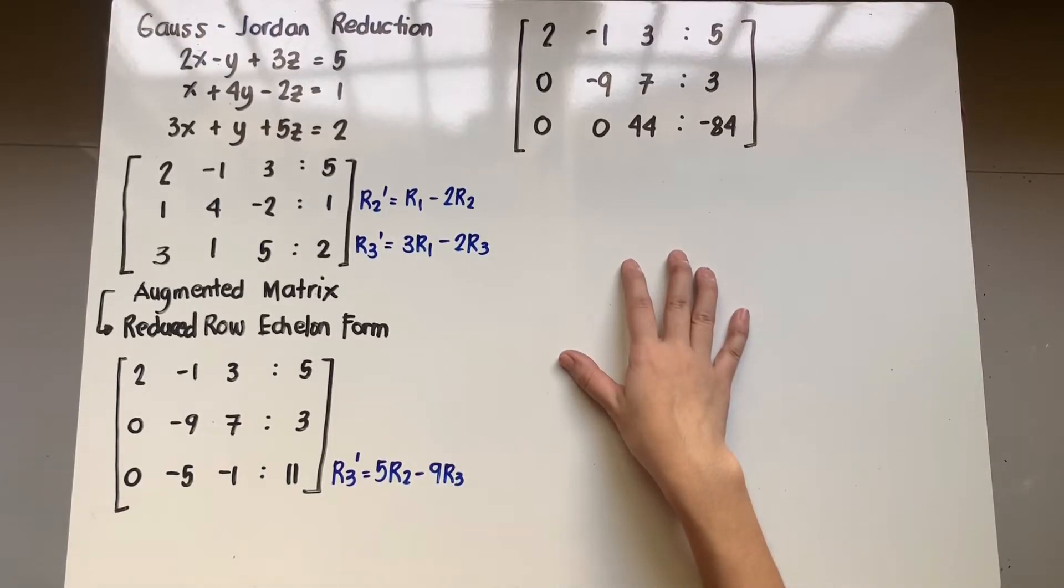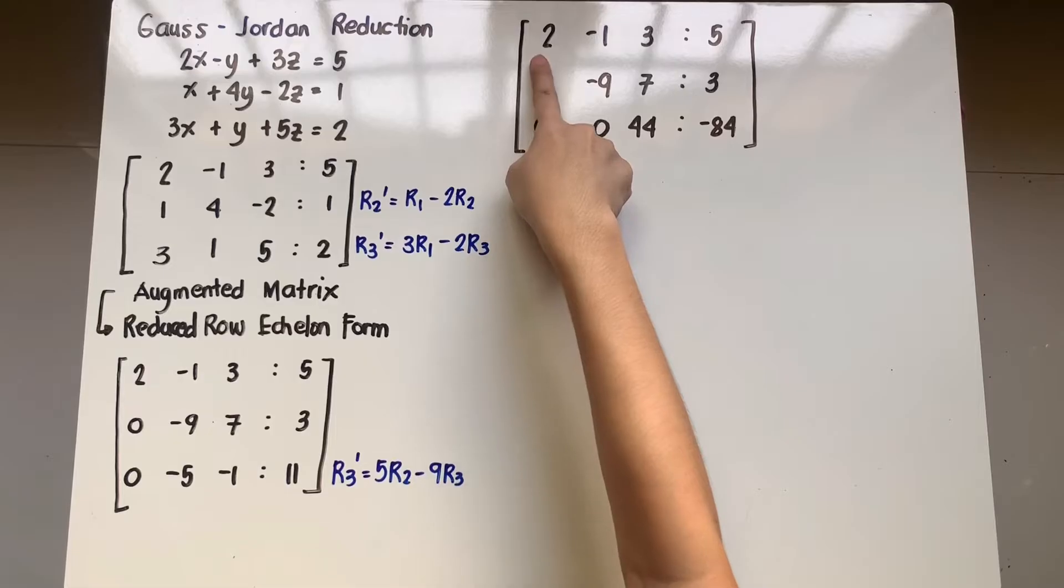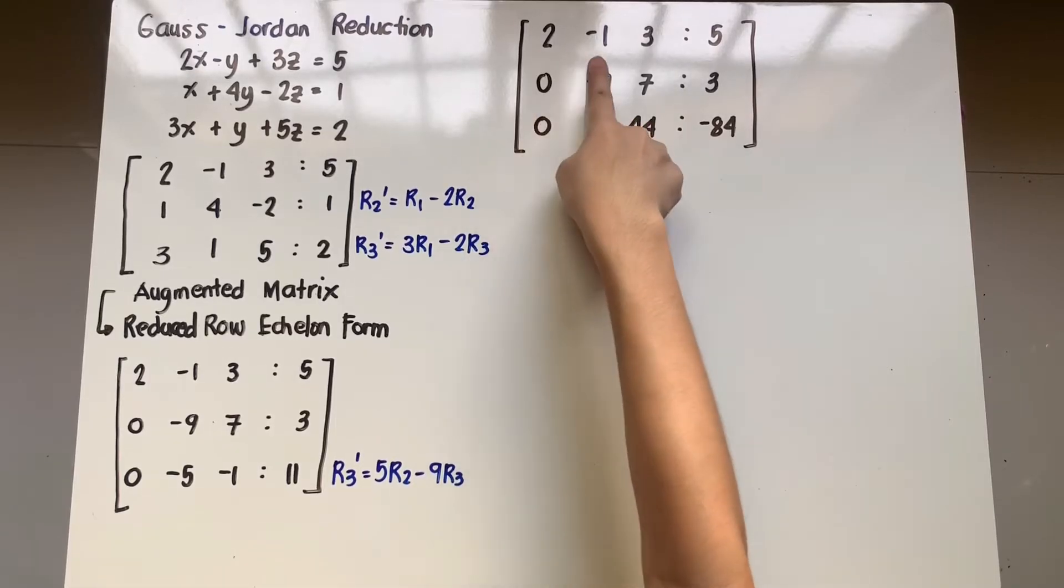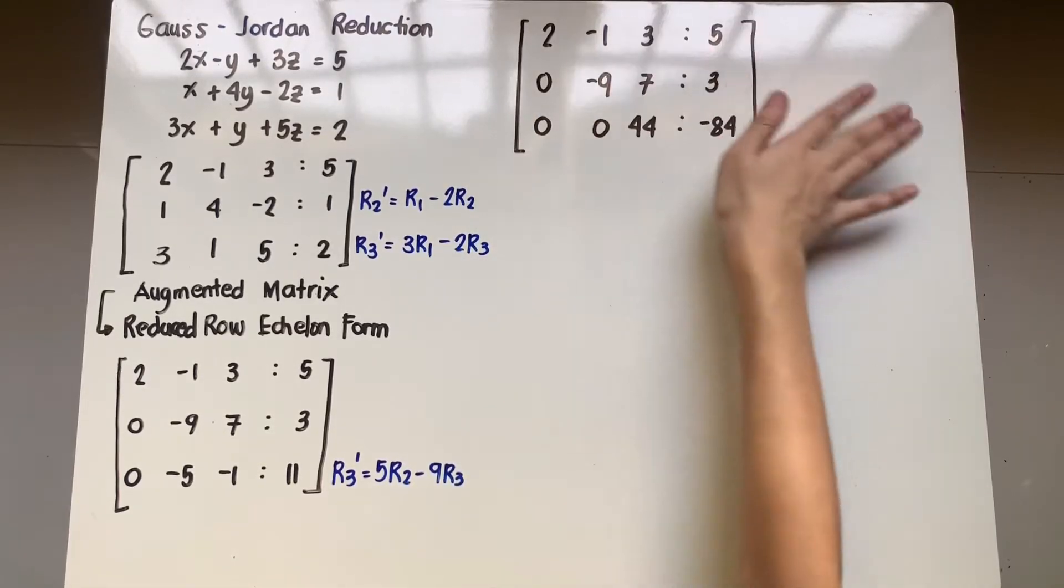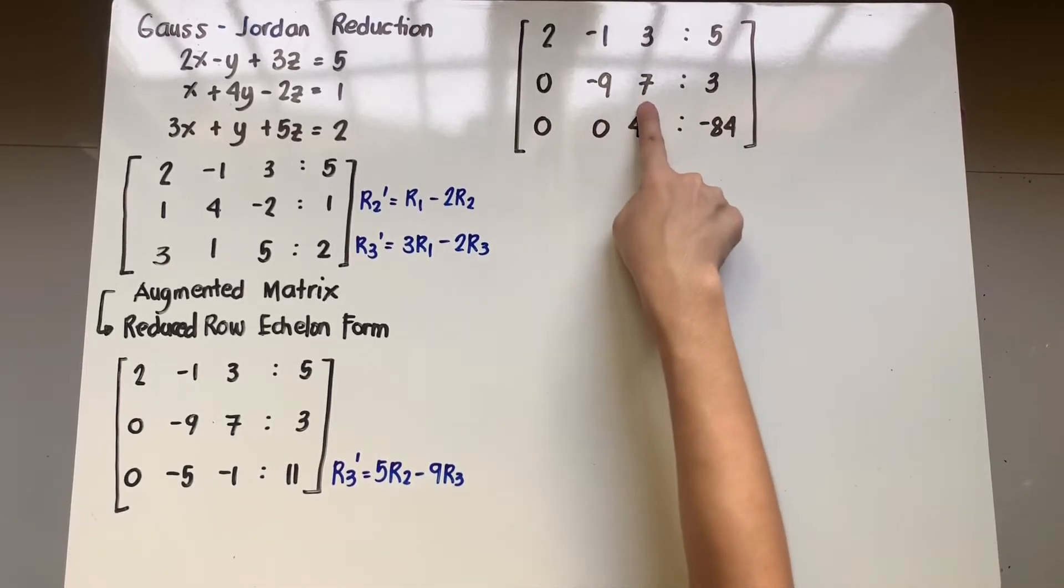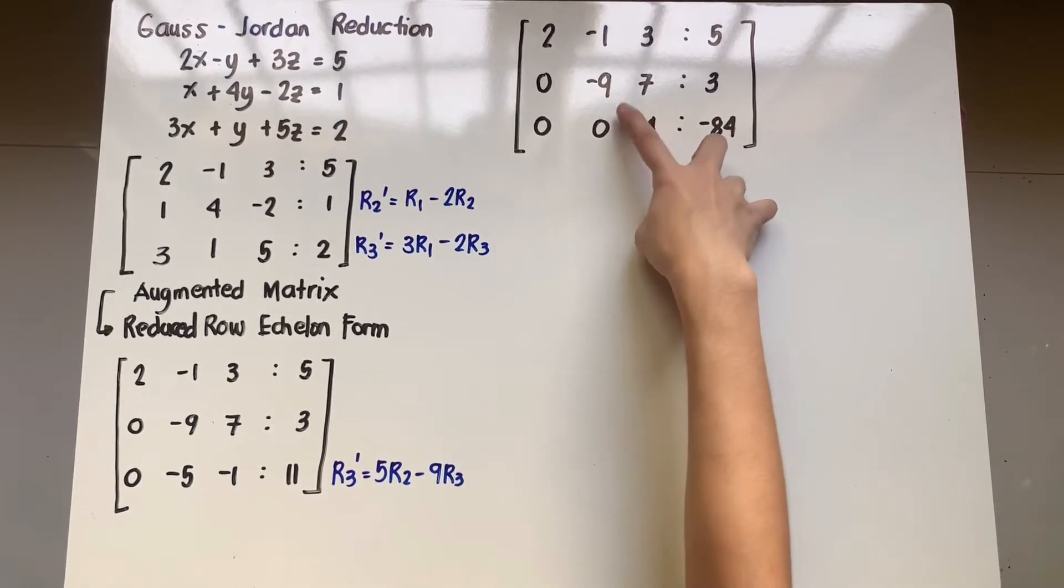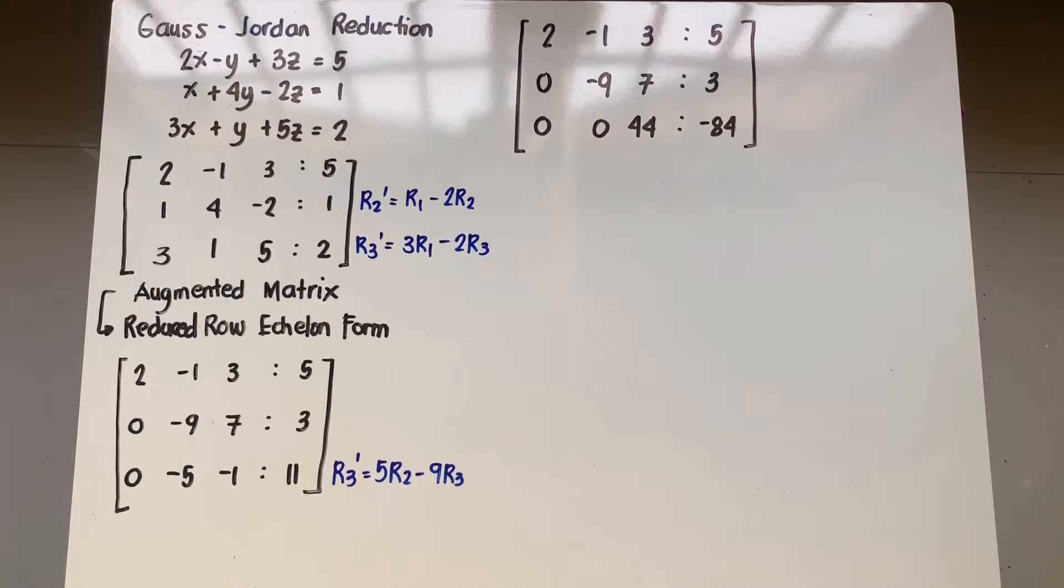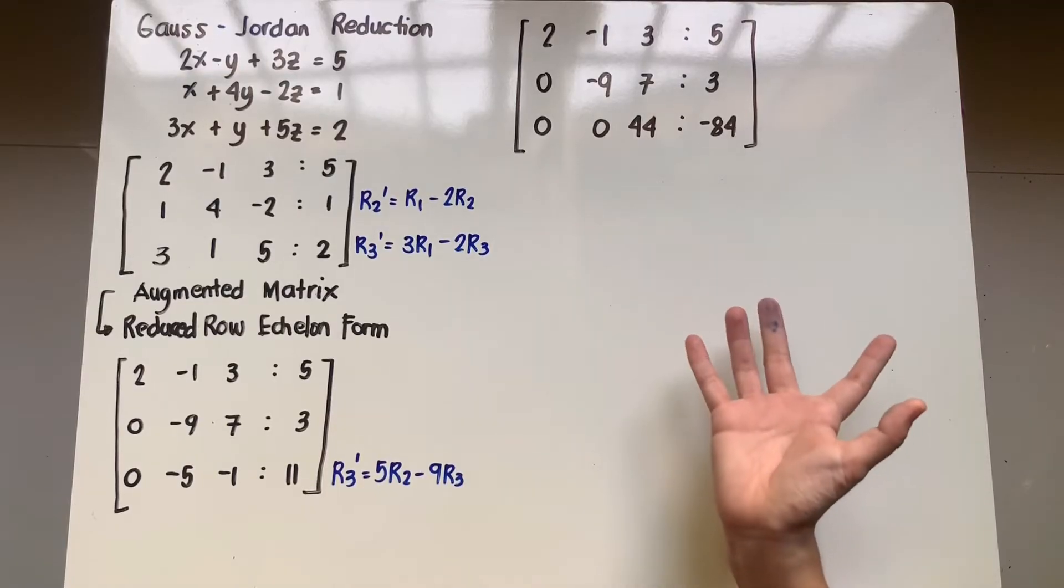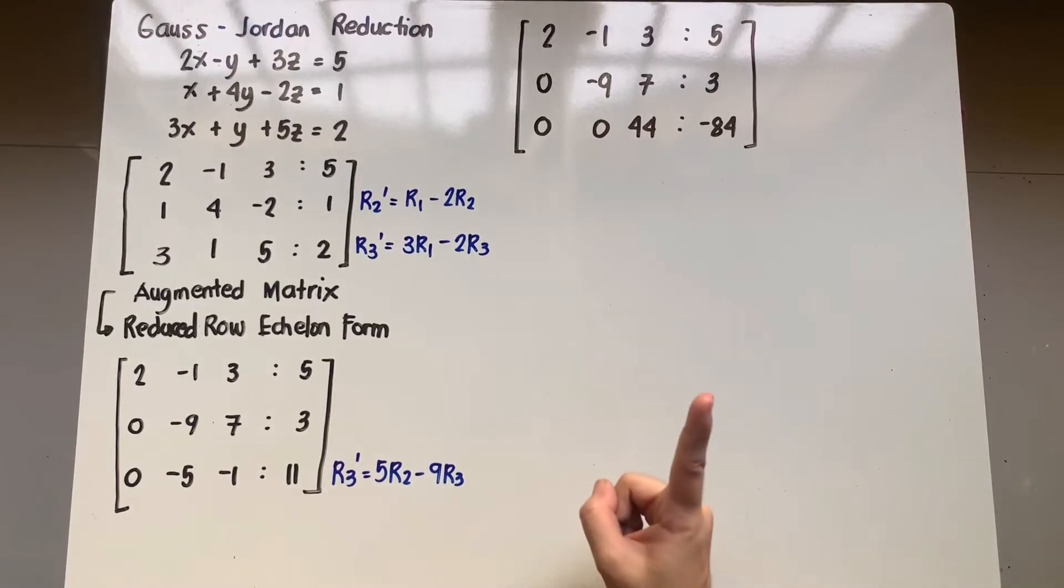So ibig sabihin, in the first row where the leading element is 2, dapat siya lang yung non-zero. Ibig sabihin, negative 1, 3 should be 0. Also, in the second row, negative 9, siya lang dapat yung non-zero. So 7 should be 0. And here, ito lang yung non-zero natin. Pero this time, instead of retaining any non-zero number, kailangan yung non-zero leading coefficient natin should be equivalent to 1.